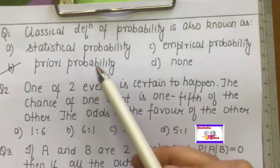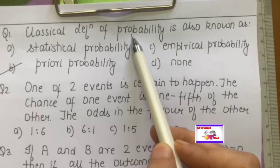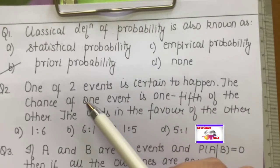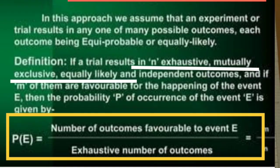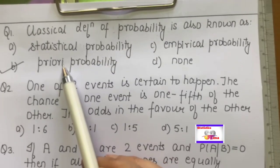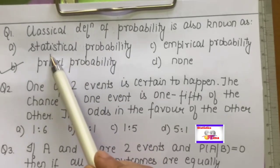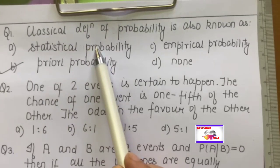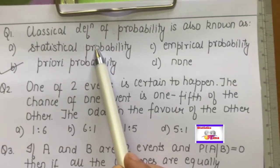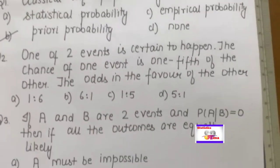The conditions for the classical approach are that the events should be mutually exclusive, equally likely, and exhaustive — then you can apply this approach. So the answer for this question will be prior probability, also called mathematical probability. The second approach is statistical probability, also called the frequentist approach. These are all basic concepts you should know.